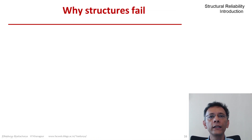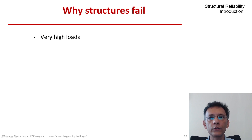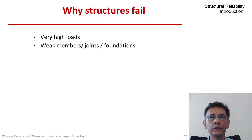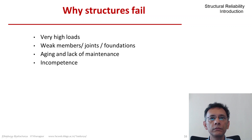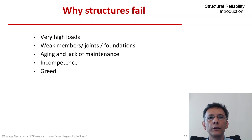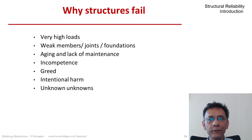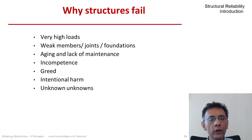Why do structures fail? There are many reasons. There could be very high loads — loads that are outside the design envelope. Some key elements may be weaker than they should be. Ageing and lack of maintenance play a role, as does sometimes plain incompetence: bad design, bad construction, greed, and deliberately using low quality materials and workmanship. There is also intentional harm, and sometimes, as a famous person once said, the 'unknown unknowns' — previously unknown failure modes, not understanding accurately how the structure may behave, particularly under unusual conditions.